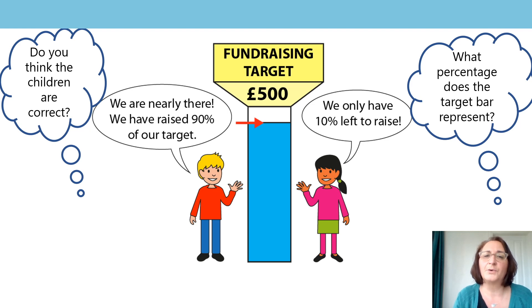The target board looks like a bar that represents 100% of the total amount to be raised. And I can see that a very large proportion of the bar is shaded. The board shows that the children have almost raised the full amount. They have almost raised 100%. Remember our stem sentence about percent? So the whole has been divided into 100 equal parts and each equal part is worth 1%. Therefore I think both children are correct as 90% is a large part of the whole and they need to raise another 10% to reach the whole.